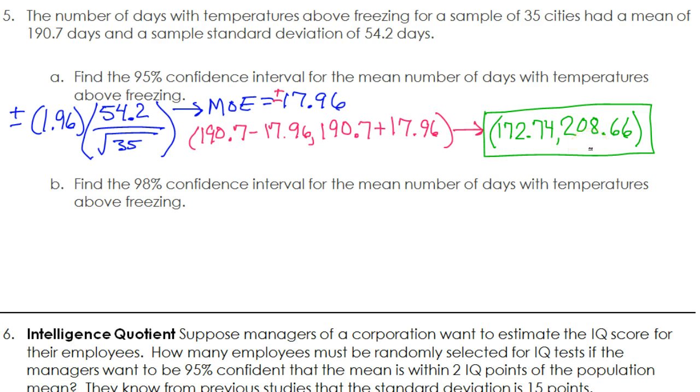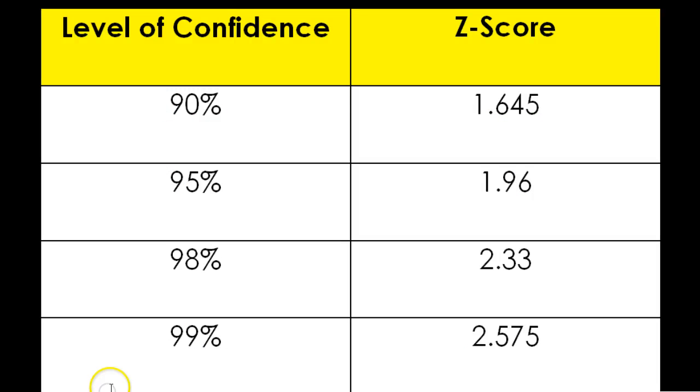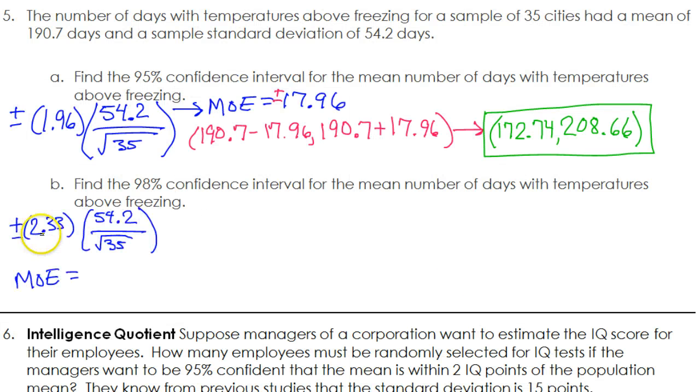If I want the 98% confidence interval, I'm going to do the exact same thing, except I will have to use a z-score of 2.33 if I want a 98% level of confidence. The only thing that changed was I went from this z-score to this z-score. This turns out to be 21.35.